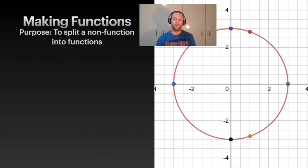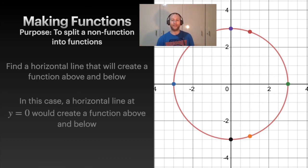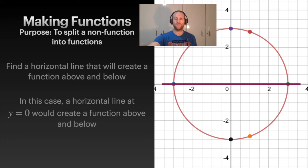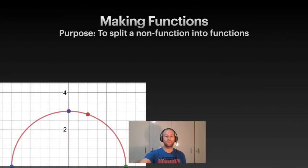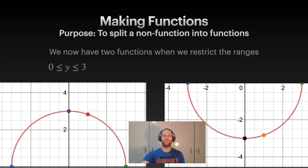What we can do is turn this circle into two different functions by restricting the range. Find a horizontal line that splits the graph into two parts — above that line is one function and below it is another. Setting y = 0 as the dividing line works here. If you cover up the bottom half, the top is a function; cover the top, the bottom is a function. So we restrict: y from 0 to 3 gives one function, and y from -3 to 0 gives another.